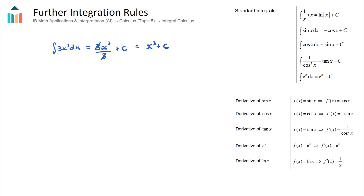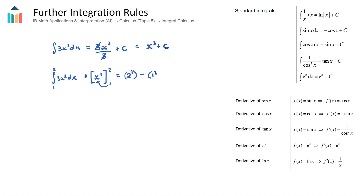We could also be asked the definite integral from 1 to 2 of 3x². The integrating step is the same — the integral of 3x² becomes x³ — but we don't need the plus c. We put a square bracket with x³, and place the 2 at the top and 1 at the bottom. We substitute in 2 to get 2³, then subtract 1³, giving 8 minus 1, which equals 7.